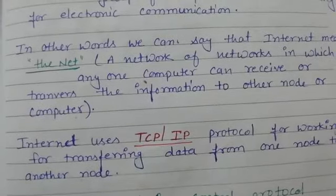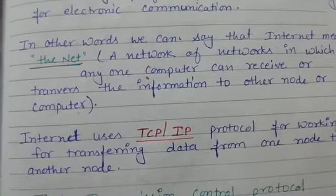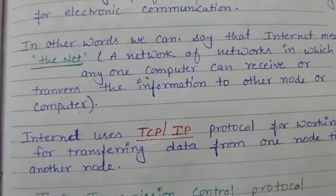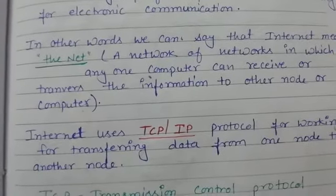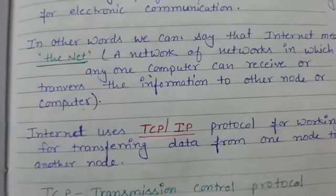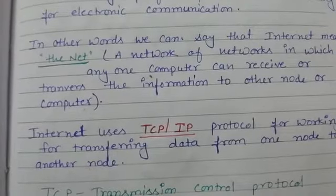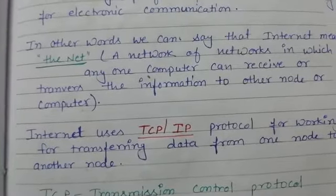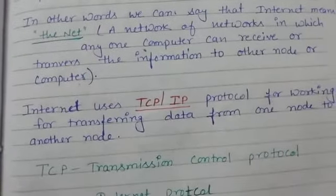Now if I ask you a simple question — children, tell me what is internet? You will say: internet is a way where we can easily access things, we can upload or download data and information. That is the simple understanding; now let's also look at the technical definition.